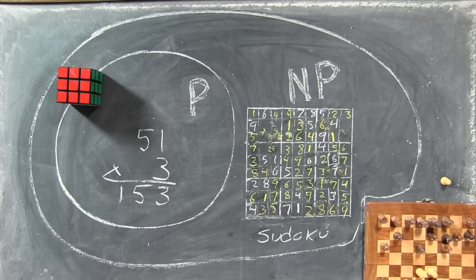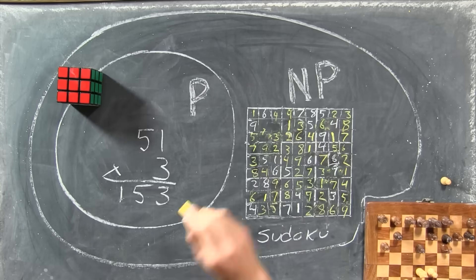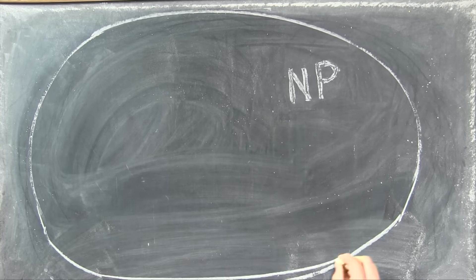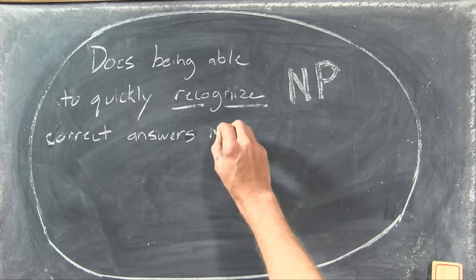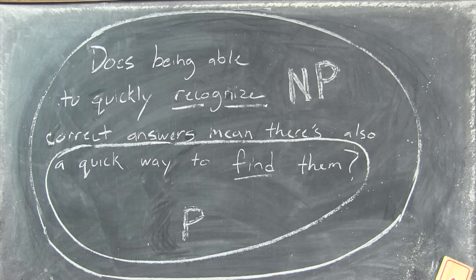As far as we know, there could be a clever way of playing Sudoku much, much faster. So that's the question. Does being able to quickly recognize correct answers mean there's also a quick way to find them? Nobody knows for sure, but either way, figuring out exactly how this works would tell us something important about the nature of computation.